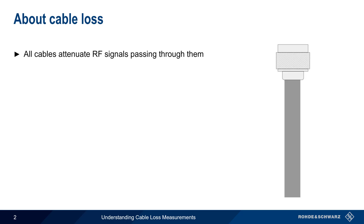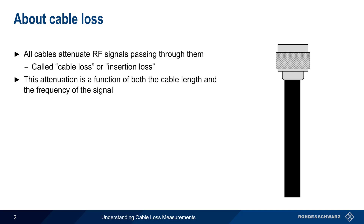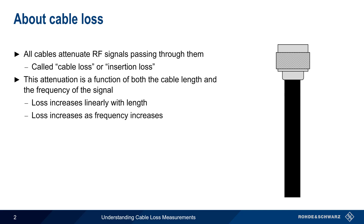All coaxial cables attenuate radio frequency signals passing through them, and this attenuation is commonly referred to as either cable loss or insertion loss. Cable loss is a function of both the length of the cable as well as the frequency of the signal passing through it. Loss generally increases linearly with increasing length — doubling the length of the cable doubles its loss. Loss also increases as frequency increases, although this is usually not a purely linear relationship.